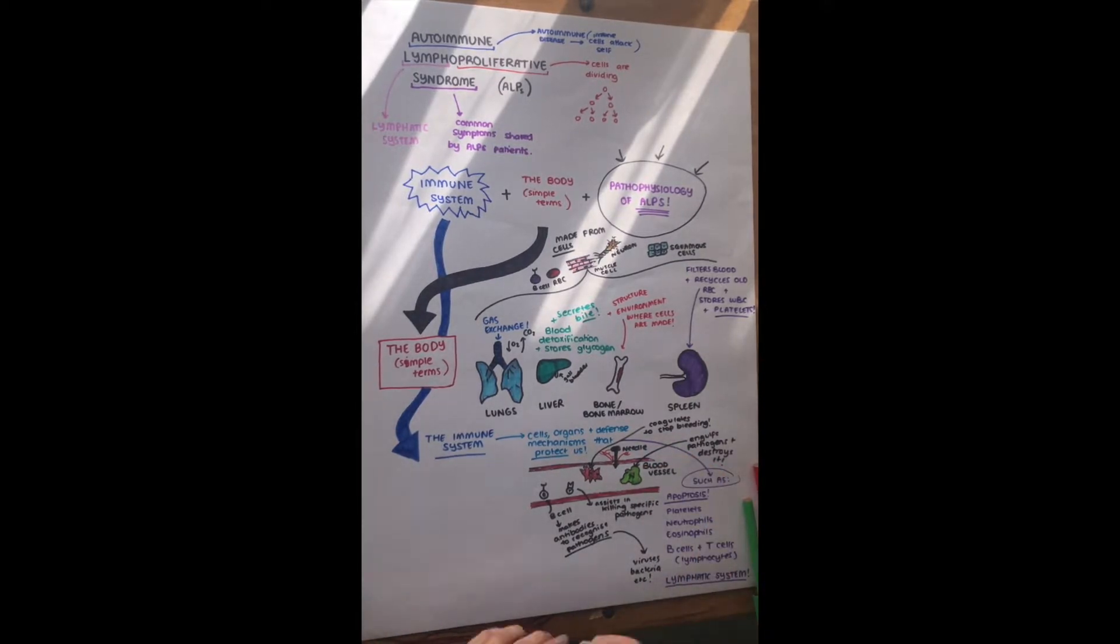Then we have what I colored in red, and this is a platelet. And what this does is it coagulates around the area of the puncture site to stop the bleeding. So it's really important. So most of these, what I've written on the right, of the cells, they're white blood cells, except for the platelets.